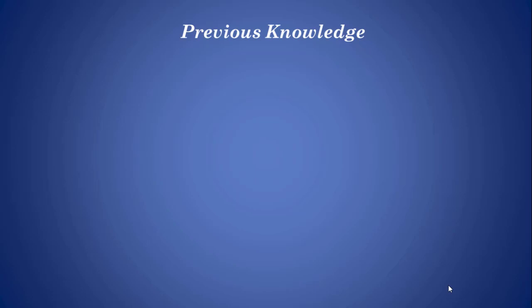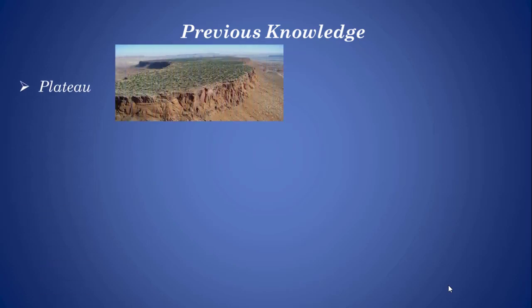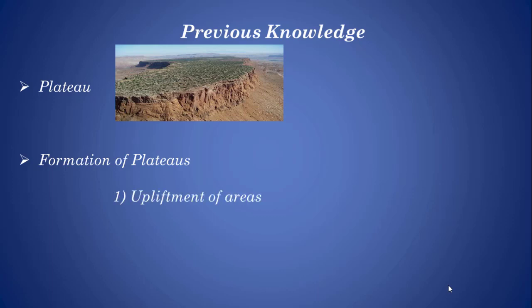Dear students, before we move on to today's lesson, let's review our previous lesson. In our previous lesson we have learnt about plateaus. A plateau is a landform which is high from the surrounding surface like a mountain but has a flat and dissected top like a plain. Plateaus have been formed in two ways. Some plateaus were formed by the uplifting of areas during the mountain building process.